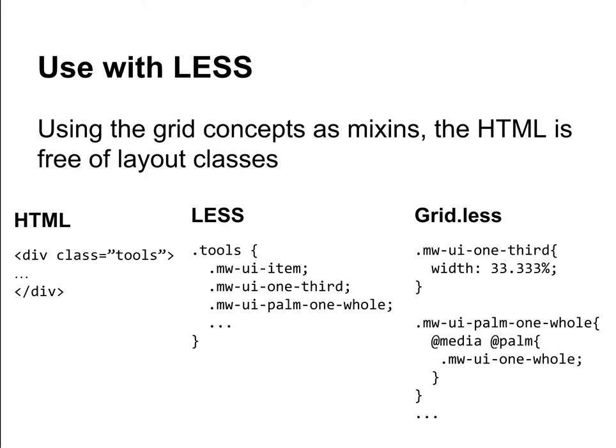This is a division for tools. And then on the styling using LESS, we can define that tools uses some mixins that are provided by the grid system to indicate that the element occupies one-third in general, but for PALM devices it occupies the whole width. Later, the specific grid implementation can define how these concepts are translated to a particular implementation, such as using a specific width for one-third or a specific breakpoint.